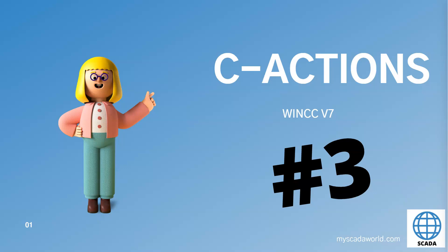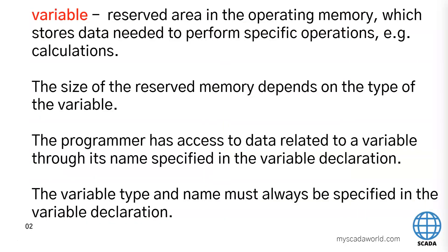As we remember, the variable is a reserved area in our memory inside our computer that stores data needed to perform some actions. For example, we need to calculate some volume or calculate specific math elements. This variable and the size of reserved memory depends on the type of this element. Different size is for char elements and different size is for floating point.